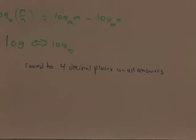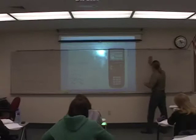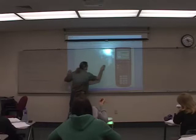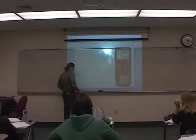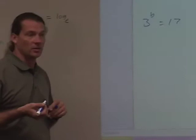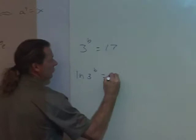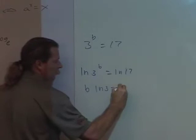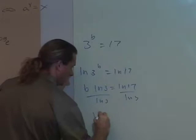Before I go any further, I do want to show you this. We said 3 to the b equals 17 and then we used log base 10. There's no reason why I couldn't have used log base any base that I want. The other base on the calculator is log base e, also known as the ln. So b times the ln of 3 is equal to the ln of 17, and I can divide away the ln of 3 and I get b is equal to the ln of 17 over the ln of 3.